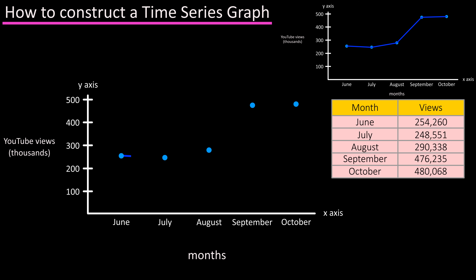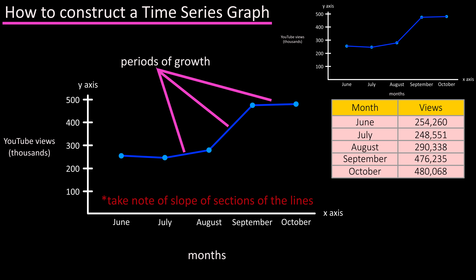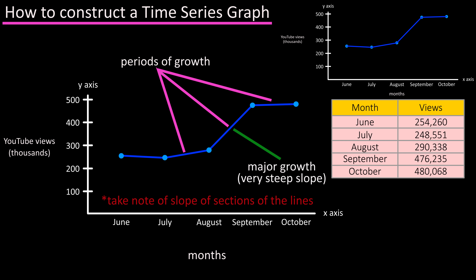The last thing is to draw in a line from point to point to point and our graph is complete. When looking at a time series graph, one thing to take note of is the slope or steepness of the lines connecting the dots, as this will tell you where there are periods of growth, periods of major growth with a very steep line, and periods of decline.